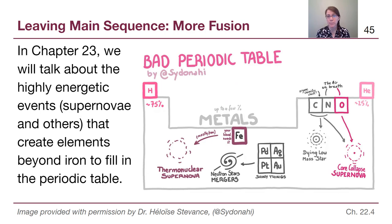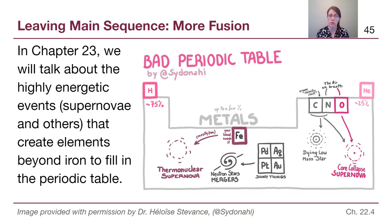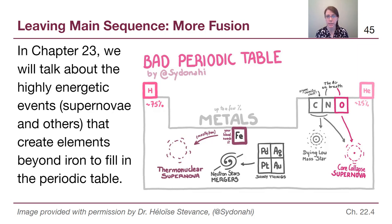In chapter 23 we will talk about what happens once stars reach their end state — whether that's a low mass star that has created a carbon core, or a high mass star that went all the way to iron and then can no longer power itself. That's what we'll be covering in chapters 23 and 24, so stay tuned.